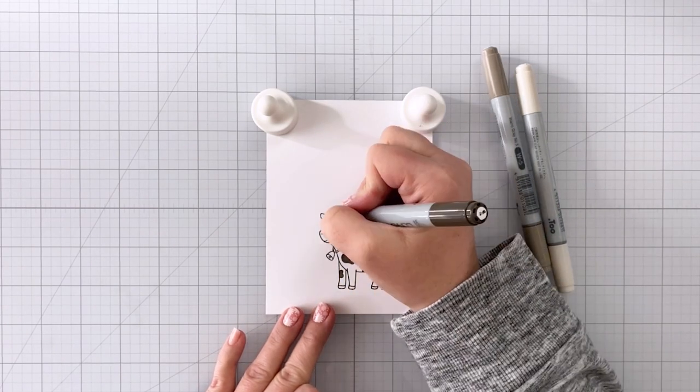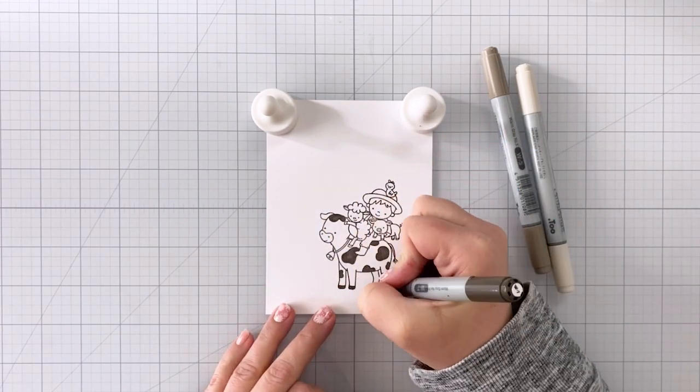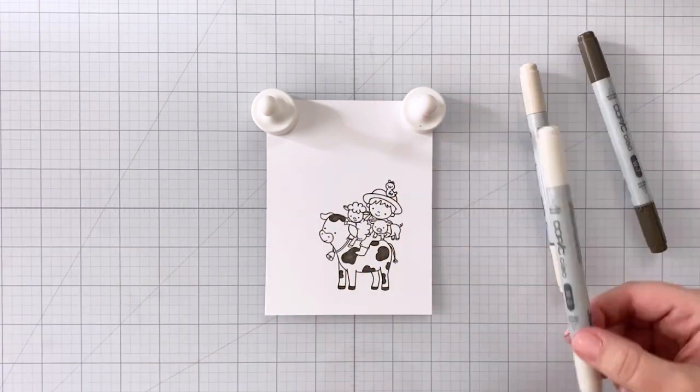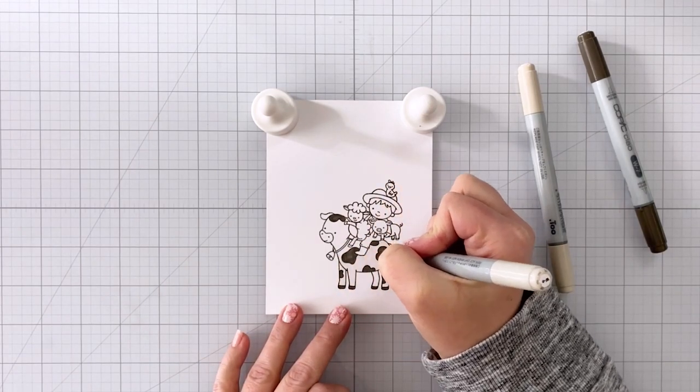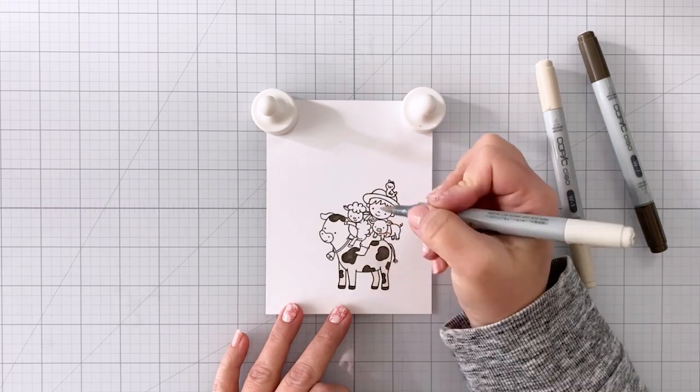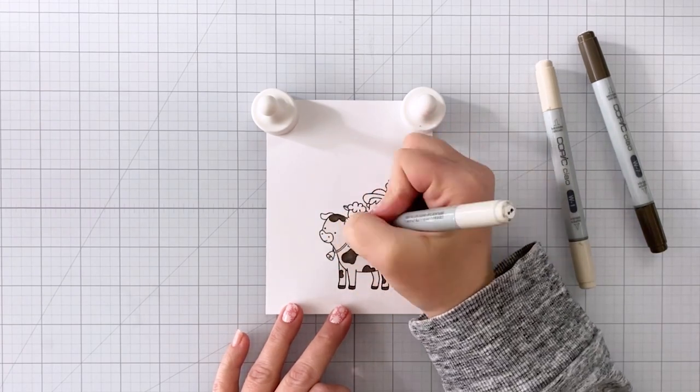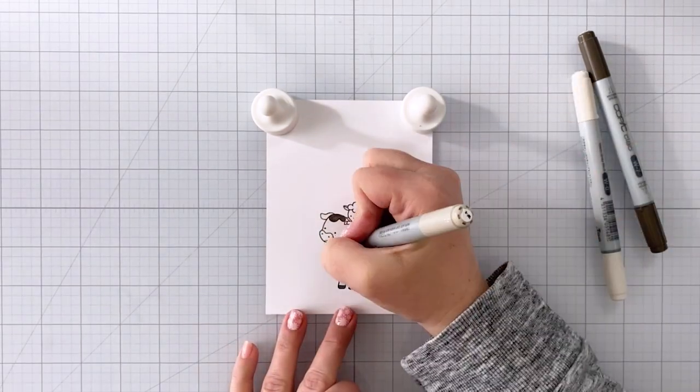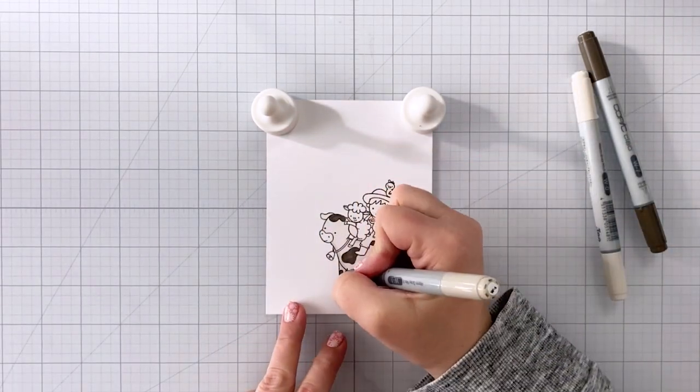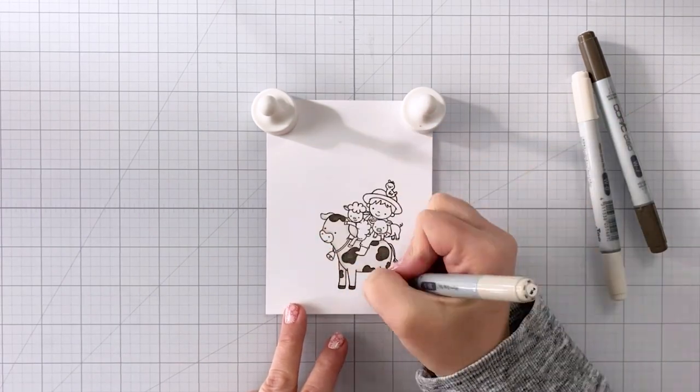For my cow, I'm using some warm grays. I find warm grays tend to work well for animals. I'm using W0, W1, and W7. And then I'm also going to be using some R11, E15, Y21, and Y28. And that's going to be for the bell as well as the collar and the cute little pink nose. And you'll see that here in a moment.